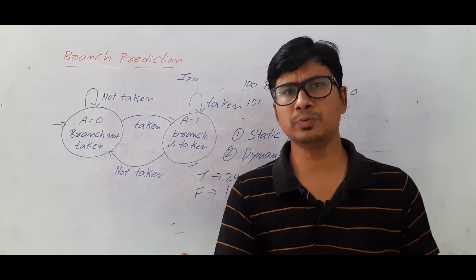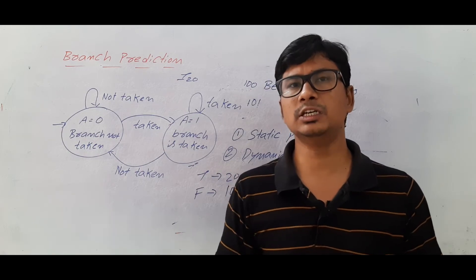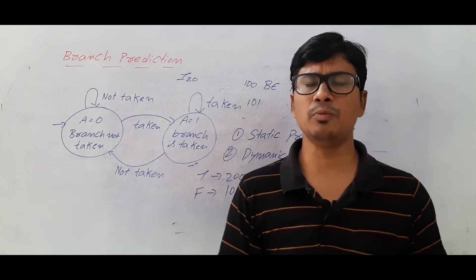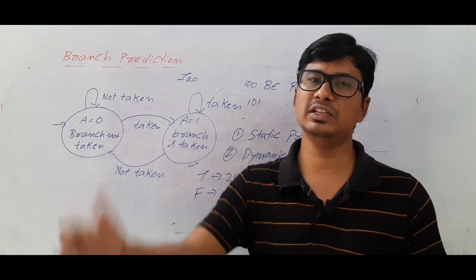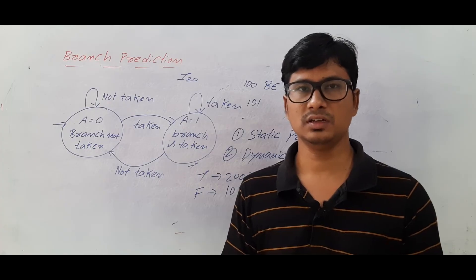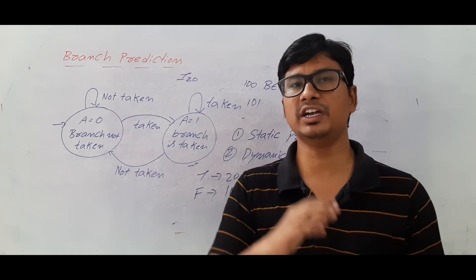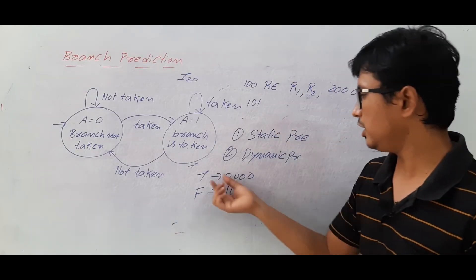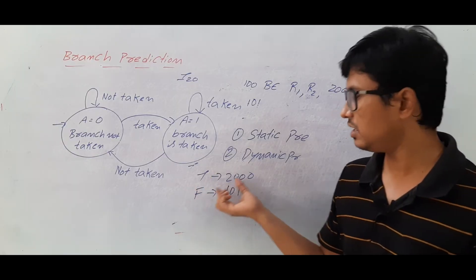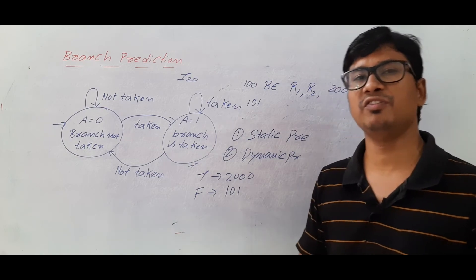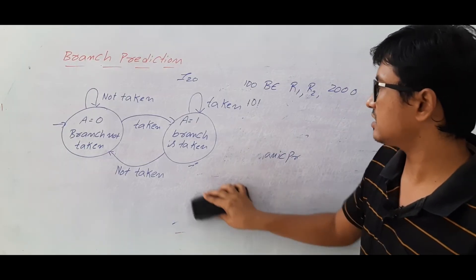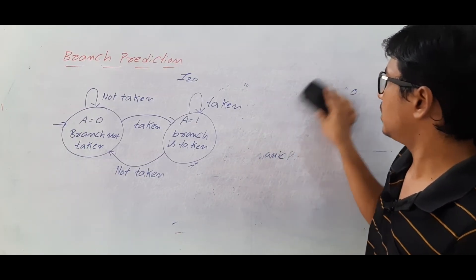An analogy for static prediction: like a cricket captain who always calls 'heads' on the coin toss regardless of the situation. If it comes up heads, he wins; otherwise he loses. Similarly, in static prediction you always pick one outcome — either branch taken or branch not taken — and proceed accordingly. If wrong, you flush the pipeline.